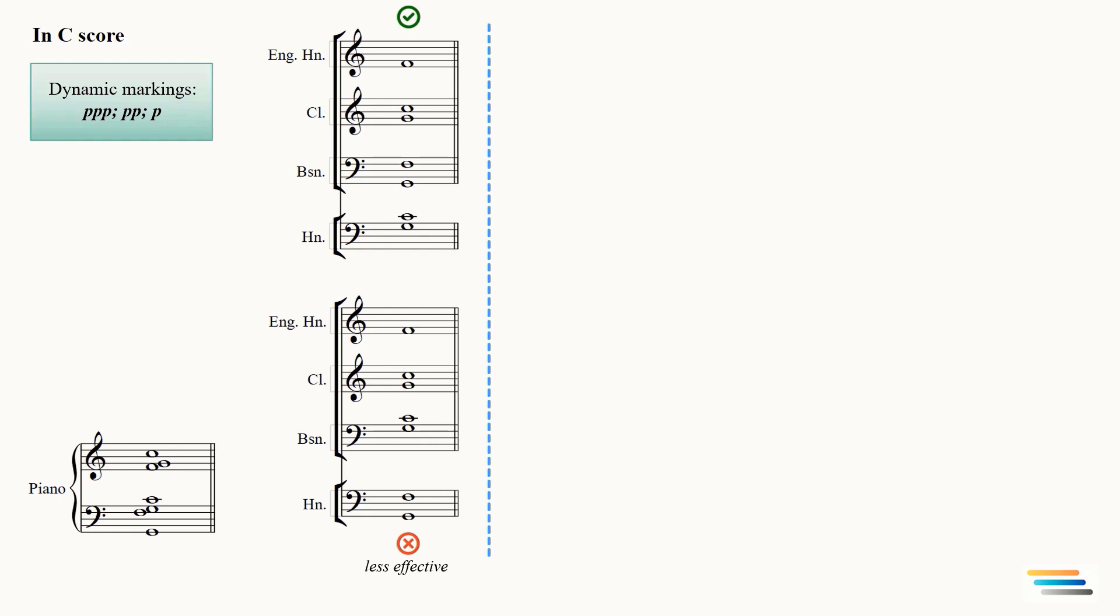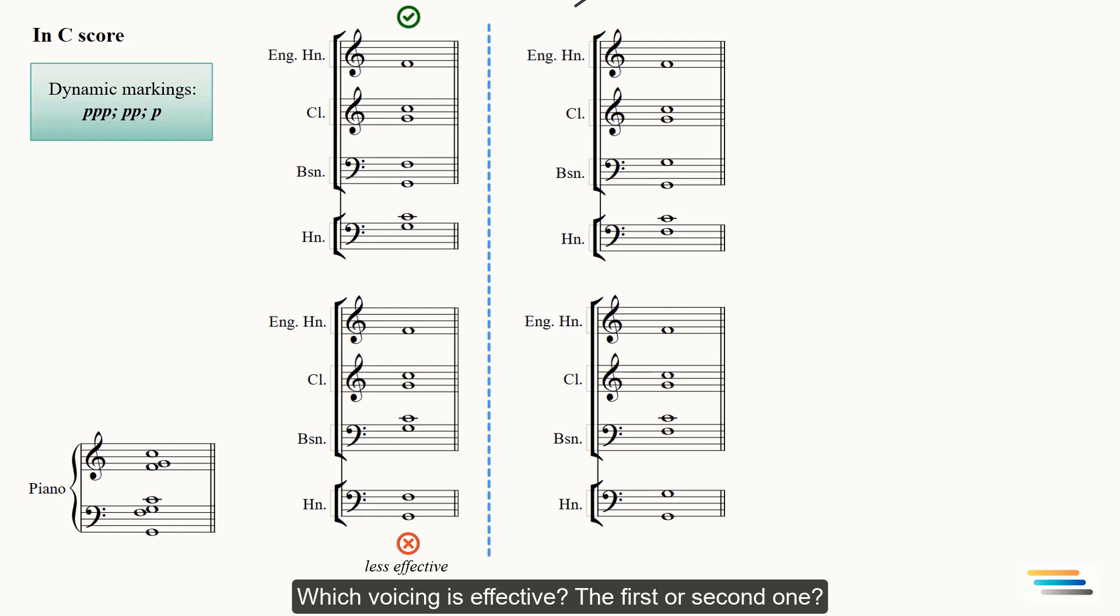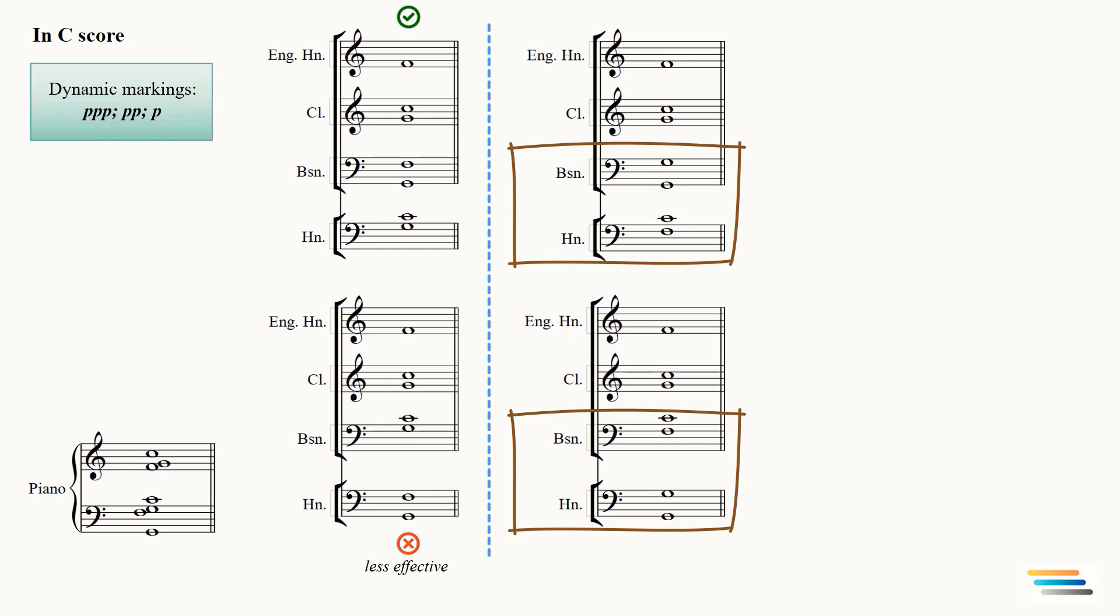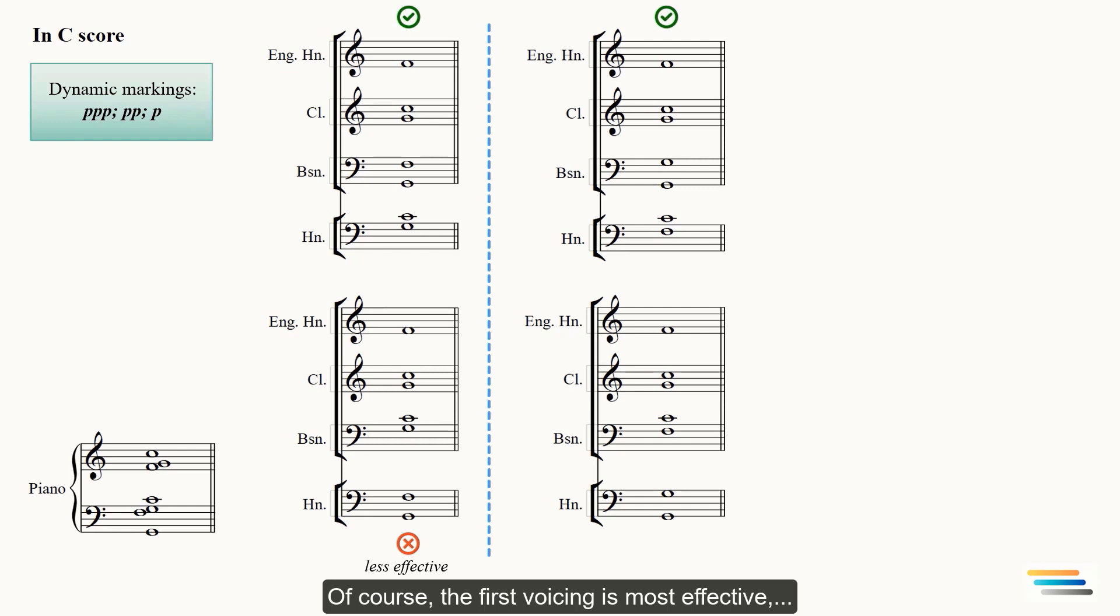Which voicing is effective, the first or second one? The upper portion of the chord is the same in both voicings. Horns and bassoons are voiced with an interlocking method. Of course, the first voicing is most effective since one of the bassoons is below the horn. Soft dynamics should be used.